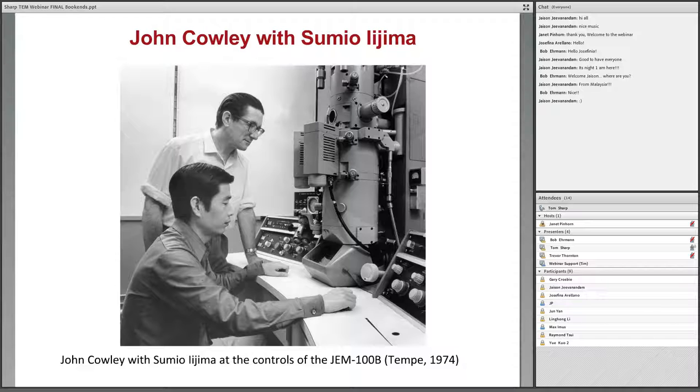Some 40 years later, at ASU, we hired a person named John Cowley. He's in the background here in this image, and in front of him is Sumio Ijima, who was a postdoc at the time. They're operating a commercial instrument, a JEOL 100B. This arrived in 1974, and this was a great instrument that allowed us to start doing high resolution TEM imaging at ASU. John Cowley was an expert in electron diffraction and microscopy, and he really started things going here at ASU.